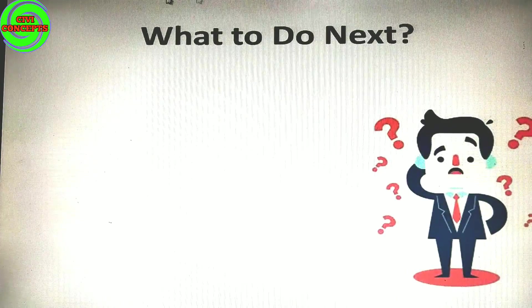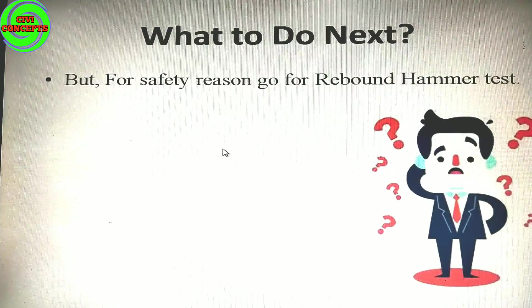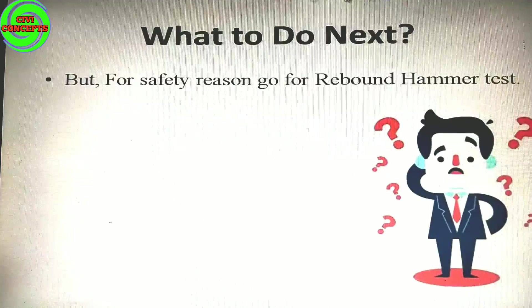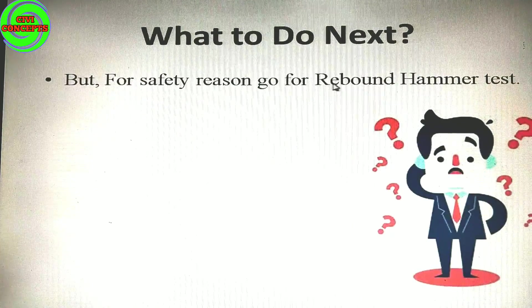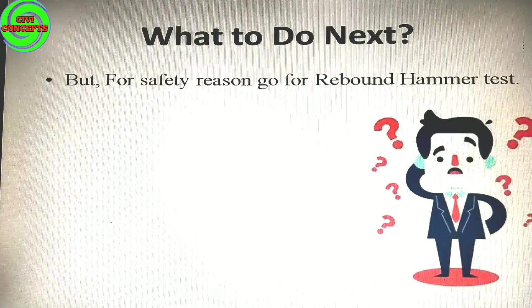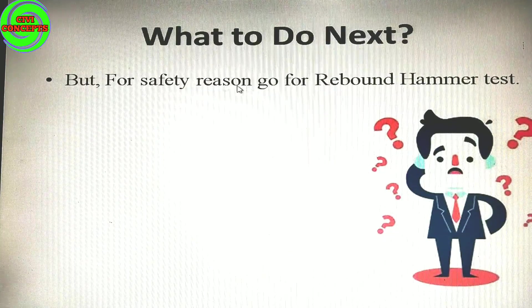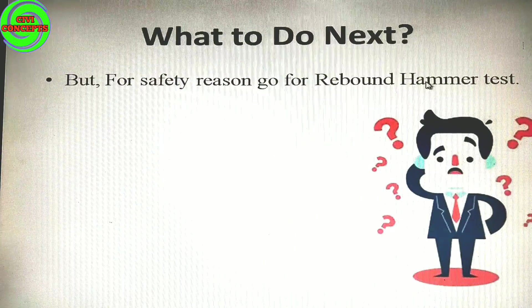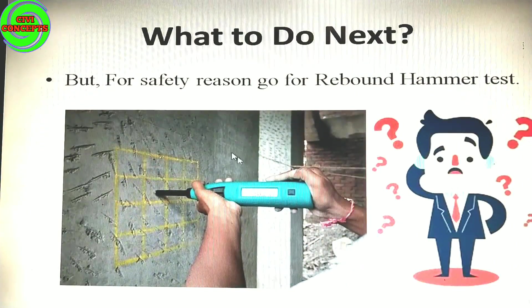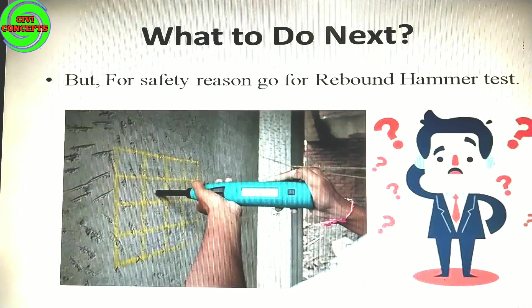Again, what to do if slab is okay? If your slab is okay and you are sure about that, but because of the failure result of your concrete cube, you have to go for the rebound hammer test. This is the image of the rebound hammer test — you press the rebound hammer against the surface and read the strength on the scale.